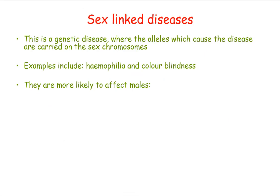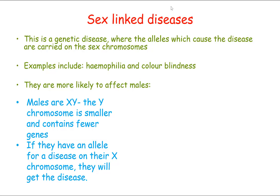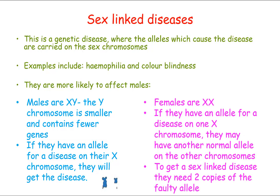Some genetic diseases are more likely to affect males than females. A sex-linked disease is a genetic disease where the alleles which cause the disease are carried on the sex chromosomes. Main examples include haemophilia and colour blindness, and they're more likely to affect males. A male is XY — if he has an allele for disease on his X chromosome, he will get the disease because the Y chromosome doesn't have a corresponding copy. Females are XX, so if they have a disease allele on one X, they may have a normal allele on the other. Females need two copies of the faulty allele to be affected.